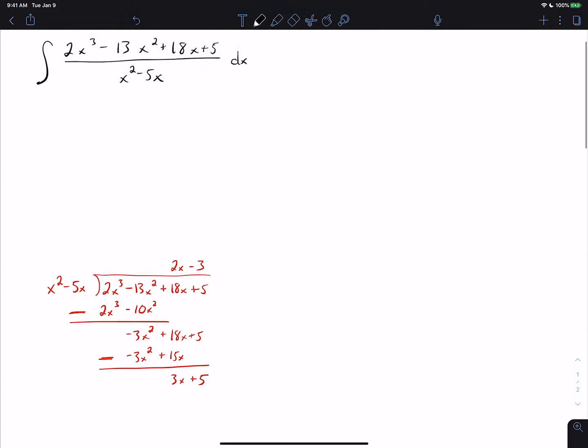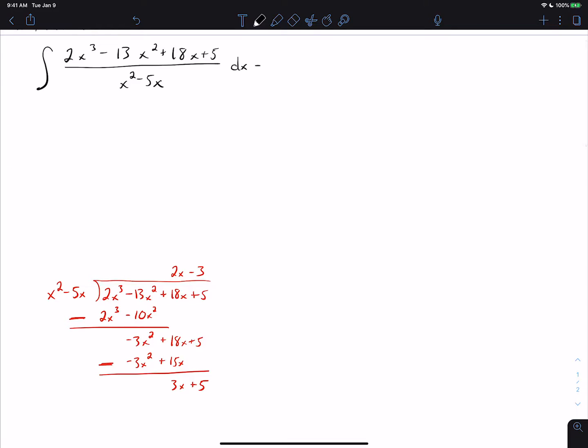What that means is that the original problem can now be rewritten as the integral of 2x minus 3 plus the remainder 3x minus 5 over the denominator x squared minus 5x dx. So the long division gets us that first step.